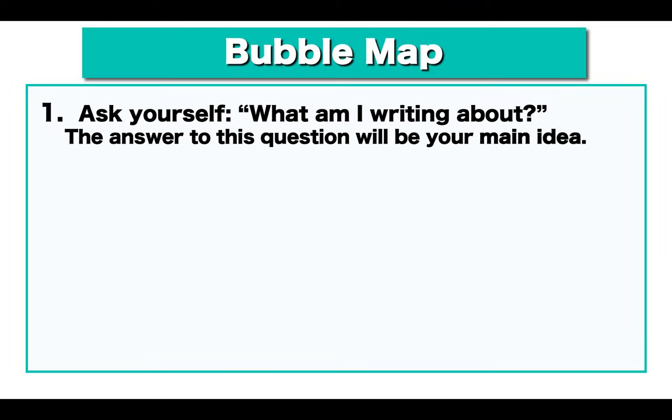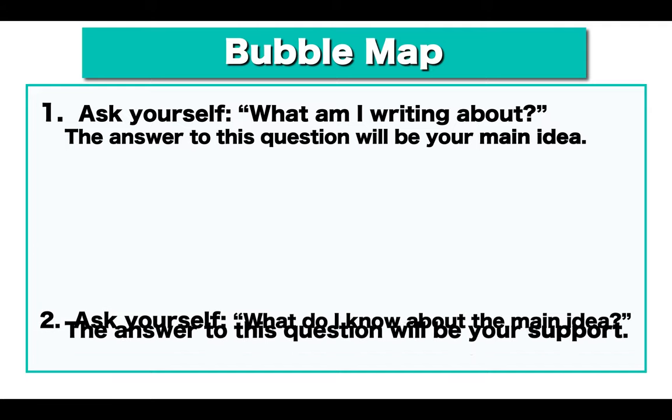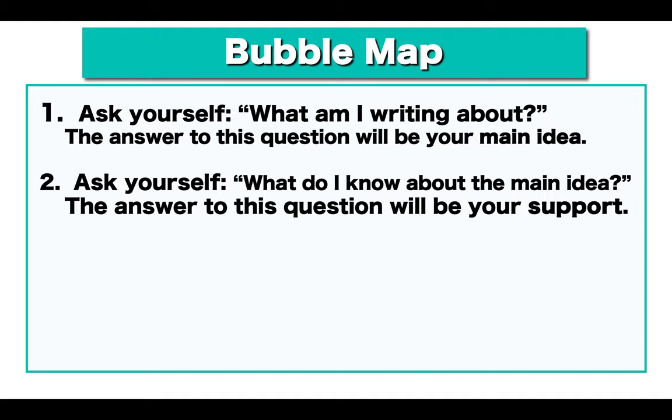Let's look at a bubble map. Number one, we should ask: what am I writing about? The answer to this question will be your main idea. Number two, ask yourself: what do you know about the main idea? The answer to this question will be your support.